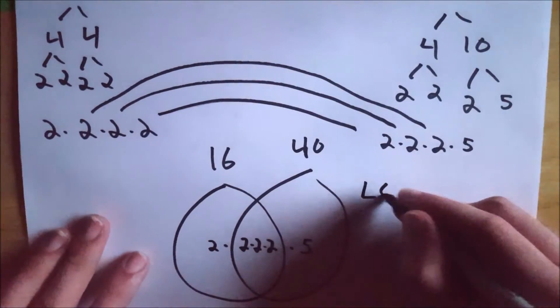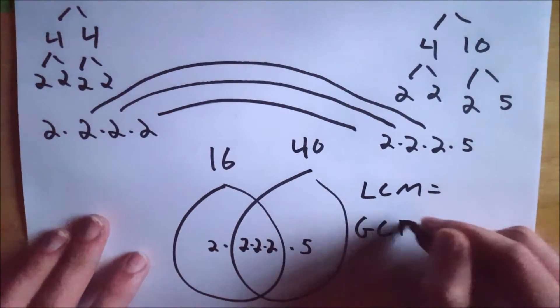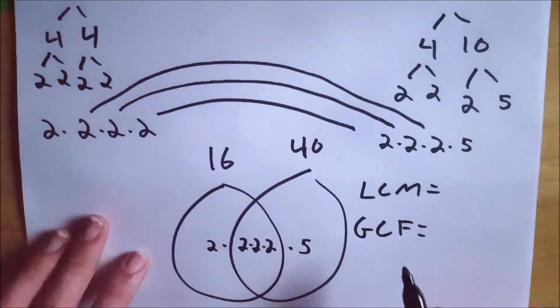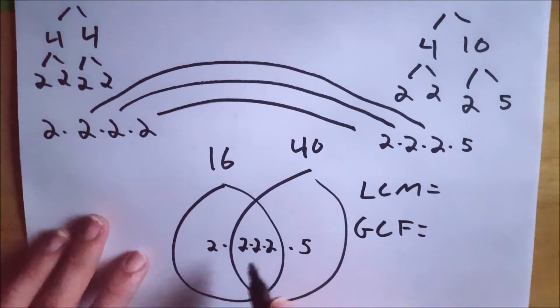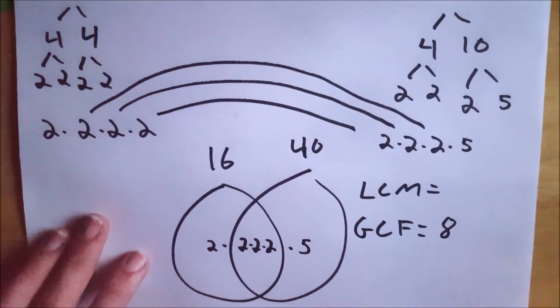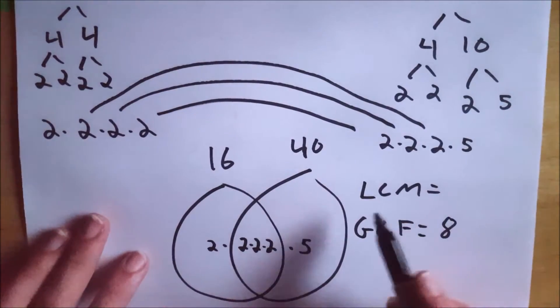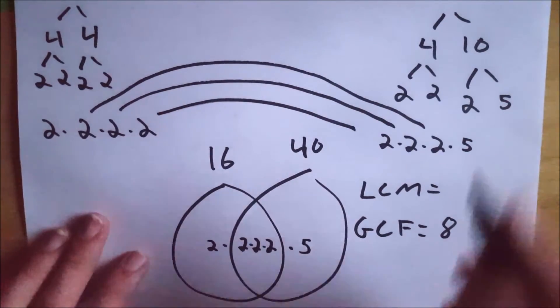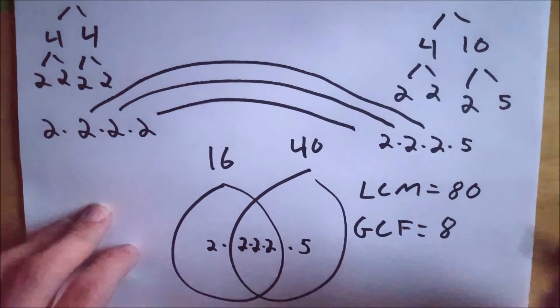So now we're trying to find the least common multiple and the greatest common factor. To find the greatest common factor, all you have to do is multiply the intersection of the circles. So where they meet. That's 2 times 2 times 2, which is 8. And 8 is the greatest common factor of 16 and 40. Then to find the least common multiple, all you have to do is multiply across all the numbers. So we know that 2 times 2 times 2 is 8 times 5 is 40 times 2 is 80. So the least common multiple is 80. That's the smallest number that both 40 and 16 go into. 40 goes into 80 twice and 16 goes into 80 5 times.